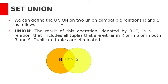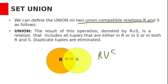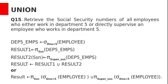We can define union on two union compatible relations R and S. The result of this union operation, denoted by R union S, is a relation that includes all tuples that are either in R or in S or in both R and S. Duplicates are eliminated.